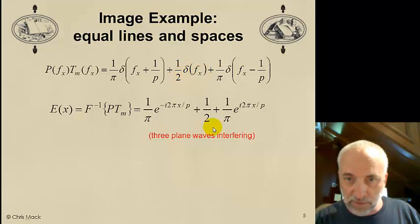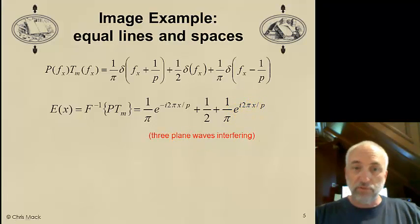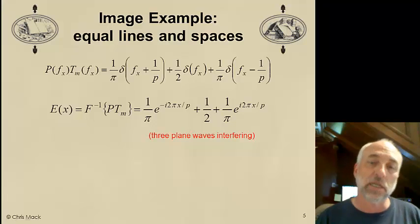And then the two shifted delta functions will produce plane waves that are coming at the wafer at angles. So I take the inverse Fourier transform. For the one-half delta function, I simply get one-half. For the one over pi, this delta function, I get one over pi times a plane wave traveling at an angle. Here, I get the opposite negative angle. That is, I have three plane waves coming down to the wafer and interfering with each other.